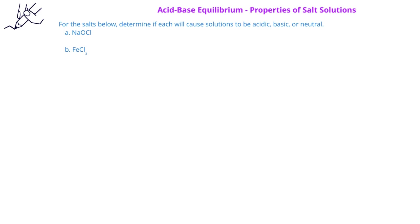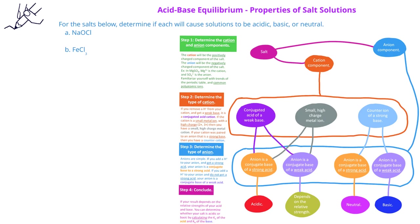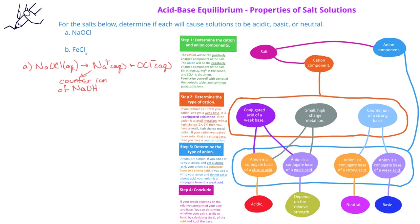In order to do this, you might want to follow this flow chart or decision tree to help you through this process. The first thing you'll do is separate the salt solution into its ions, and then for the cation, you'll decide what type of ion it is, and then you'll do the same process for the anion. Let's look at the first example: sodium hypochlorite, NaOCl. We would separate the sodium ion from the hypochlorite ion, OCl⁻. For the cation, we know that the sodium ion is the counter ion in sodium hydroxide, which is a strong base. Therefore, the sodium ion will have no effect on the solution pH.